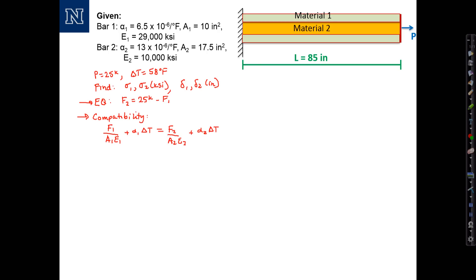let's rewrite these in the form that we want for the matrix solution. The first one: F1 plus F2 equals 25 kips. Both unknowns on the left-hand side, constants on the right-hand side.